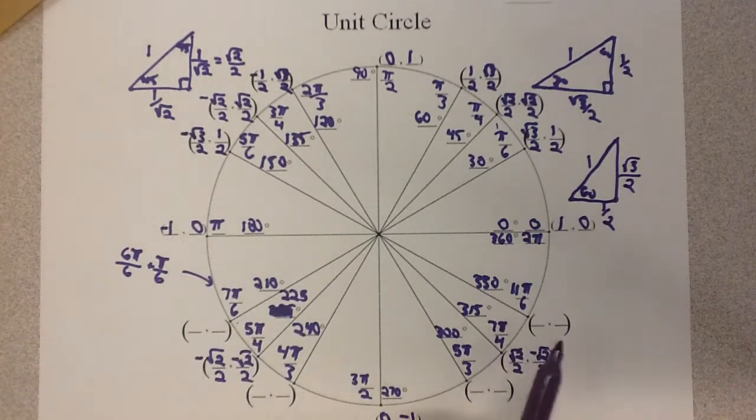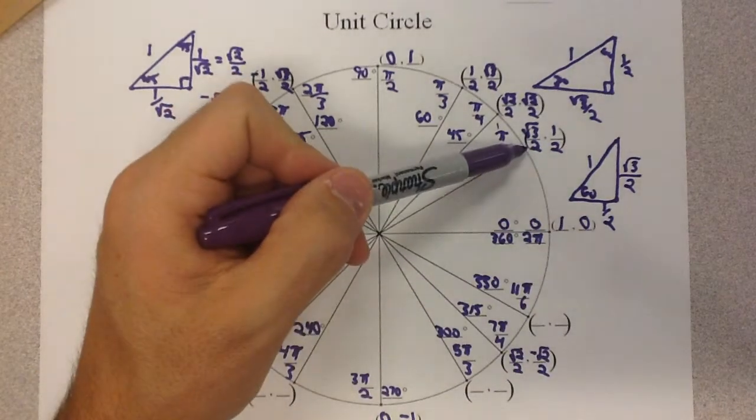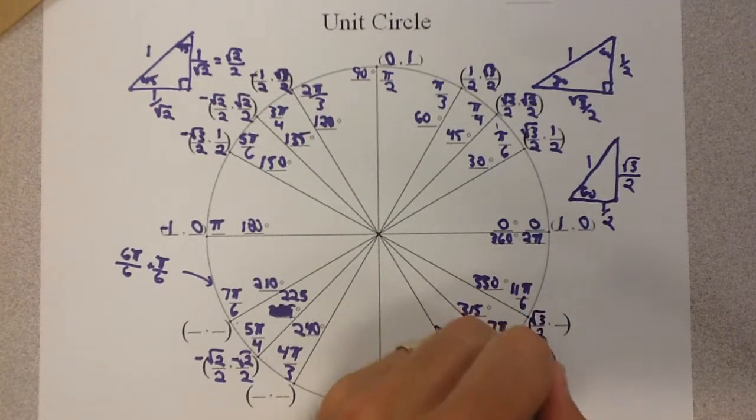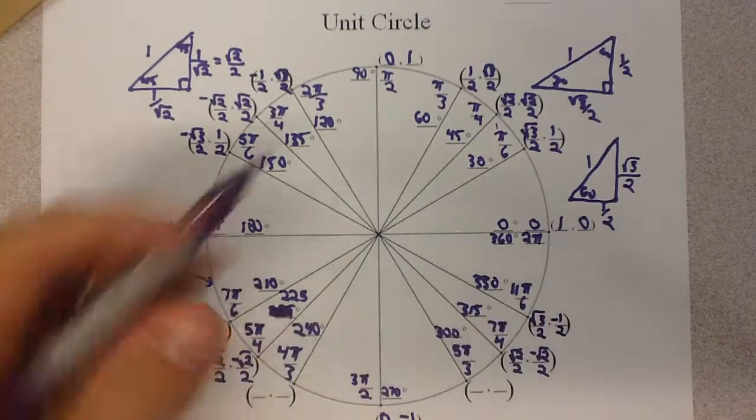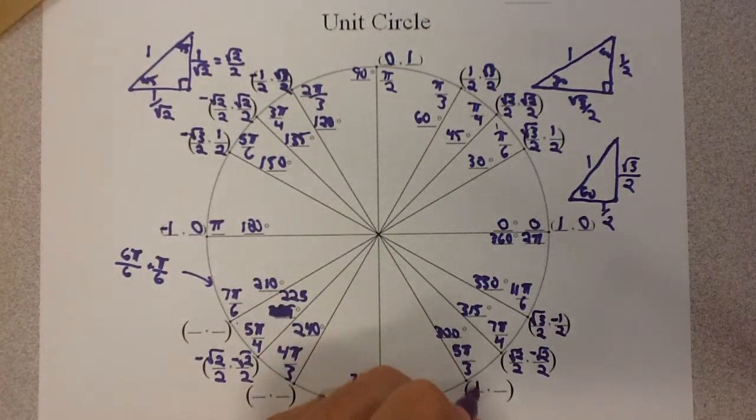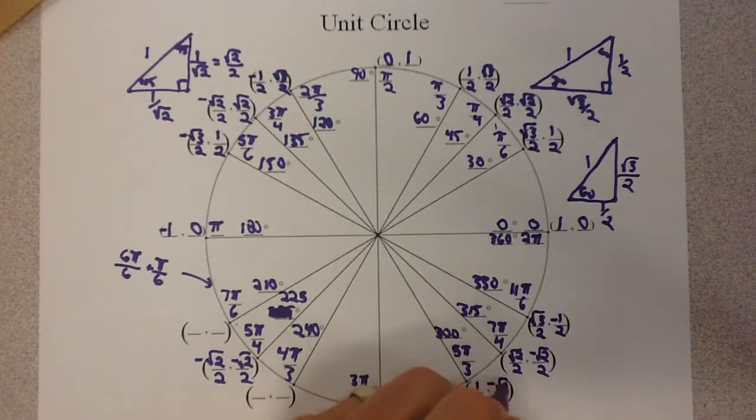Looking down in quadrant 4, this is a reflection of 30 degrees. It reflects down. The x is now positive still, but the y is negative. And then, we're going to take the 60 degrees, reflect it down. The x is positive. The y is negative.